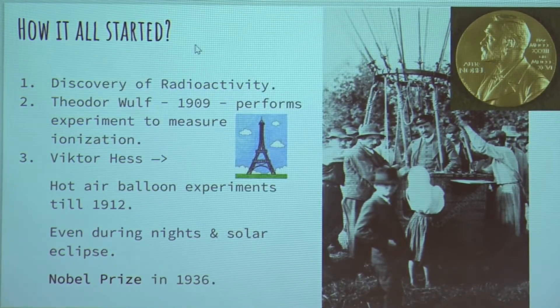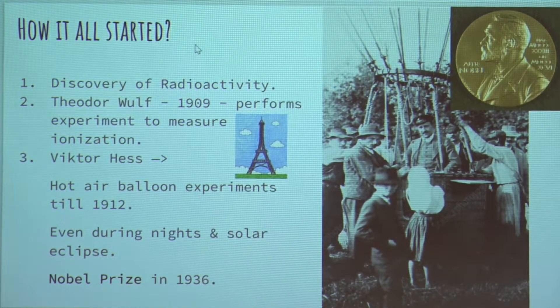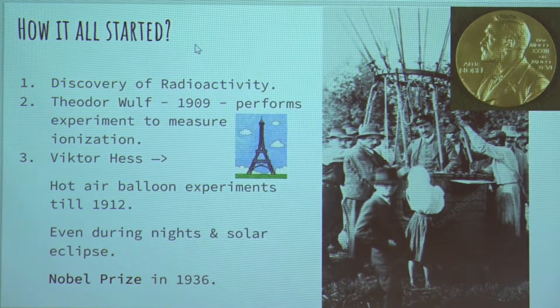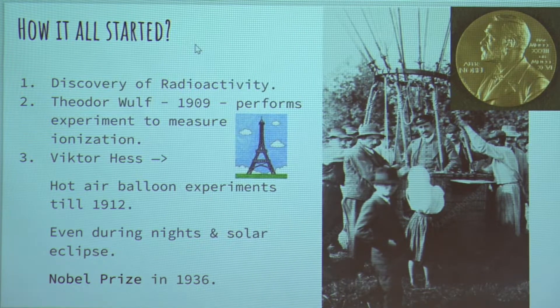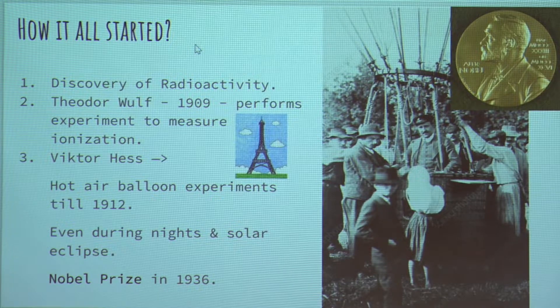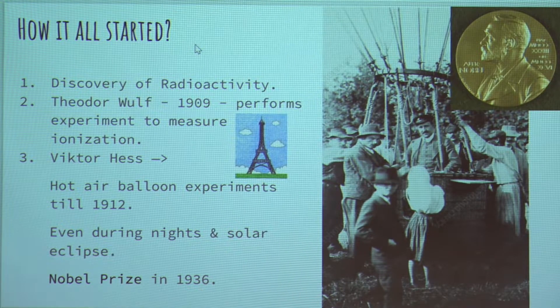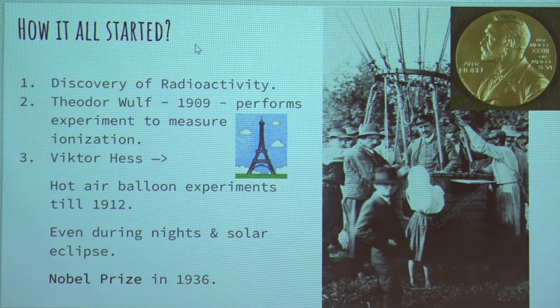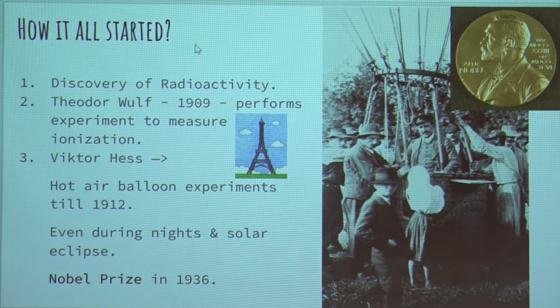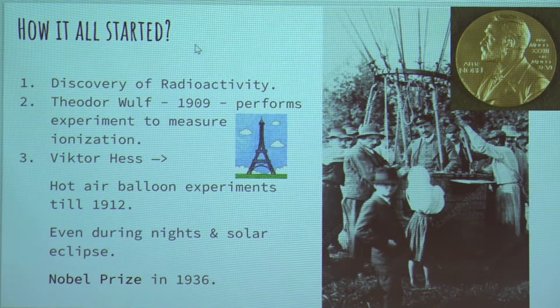On the ground, he measured ionization rate, and then he moved this electroscope to the Eiffel Tower. And you would expect that when you go high up from the ground, that ionization rate decreases. But what he instead noticed is that the ionization rate decreases, but not by a significant amount, or the amount that he had anticipated.